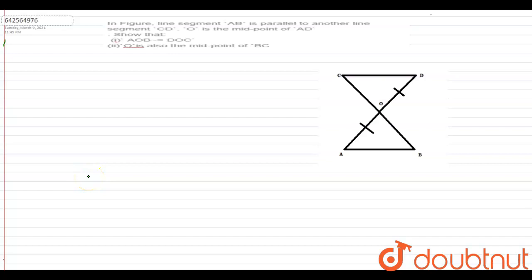In the figure, line segment AB is parallel to another line segment CD. O is the midpoint of AD. We need to show that triangle AOB is congruent to triangle DOC and O is also the midpoint of BC.